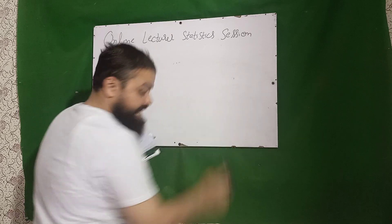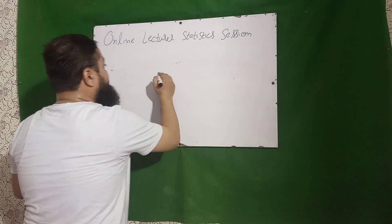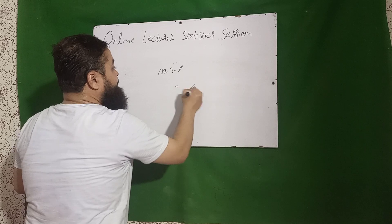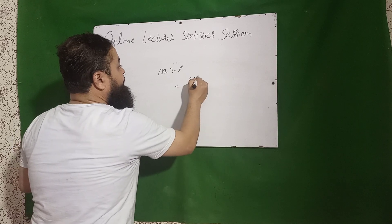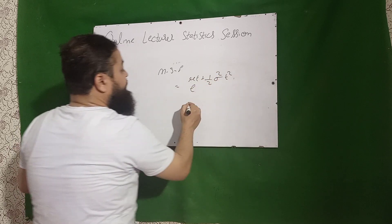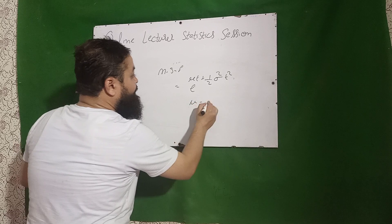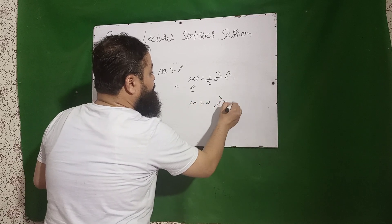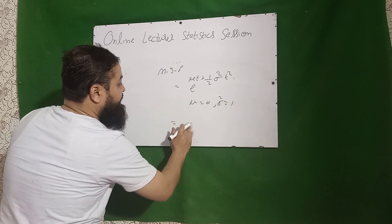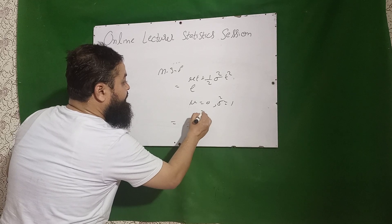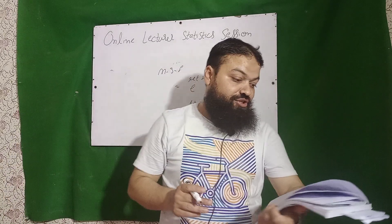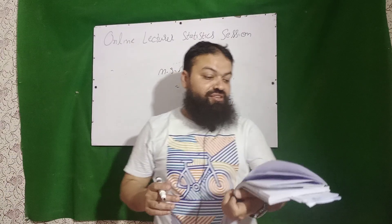In normal distribution, the moment generating function (MGF) is e raised to the power mu*t plus (1/2) sigma² t². If we put mu equal to 0 and sigma² equal to 1, we get e raised to the power (1/2) t² — that is the MGF of the standard normal distribution.